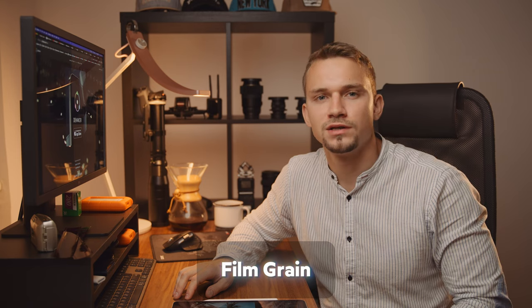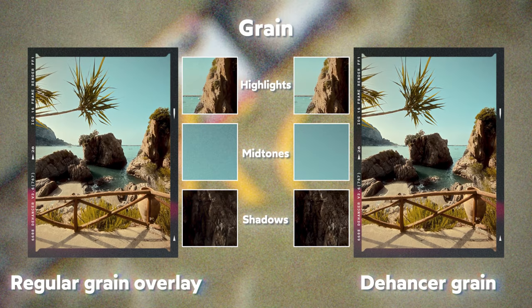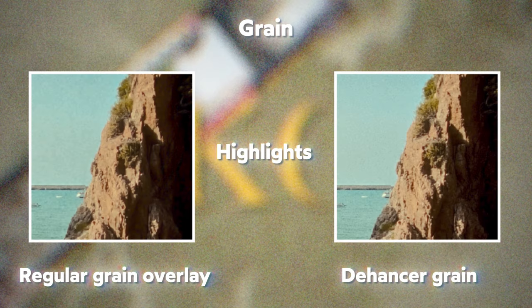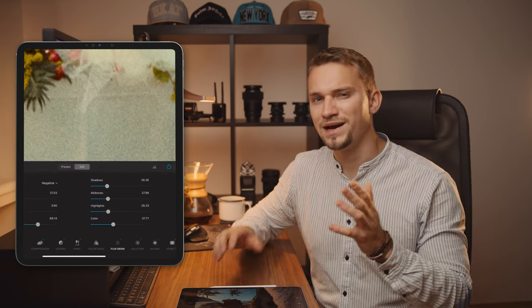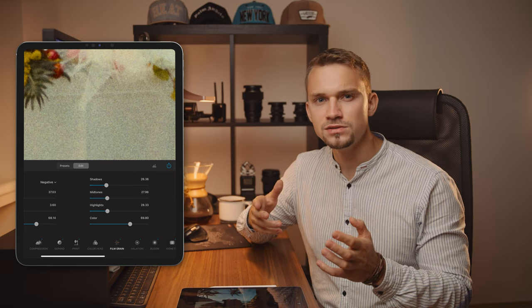Next up is film grain. The cool thing about grain here is that it behaves according to the image — it's not just some grain overlay slapped on top. It's image-based generated grain that takes into account all the film development processes, resulting in truly natural yet digital film grain. There are multiple controls: size, density, resolution. I usually play with chroma, which according to Dehancer is the amount of color micro-contrast in the grain granules — basically the RGB colorfulness of the grain.